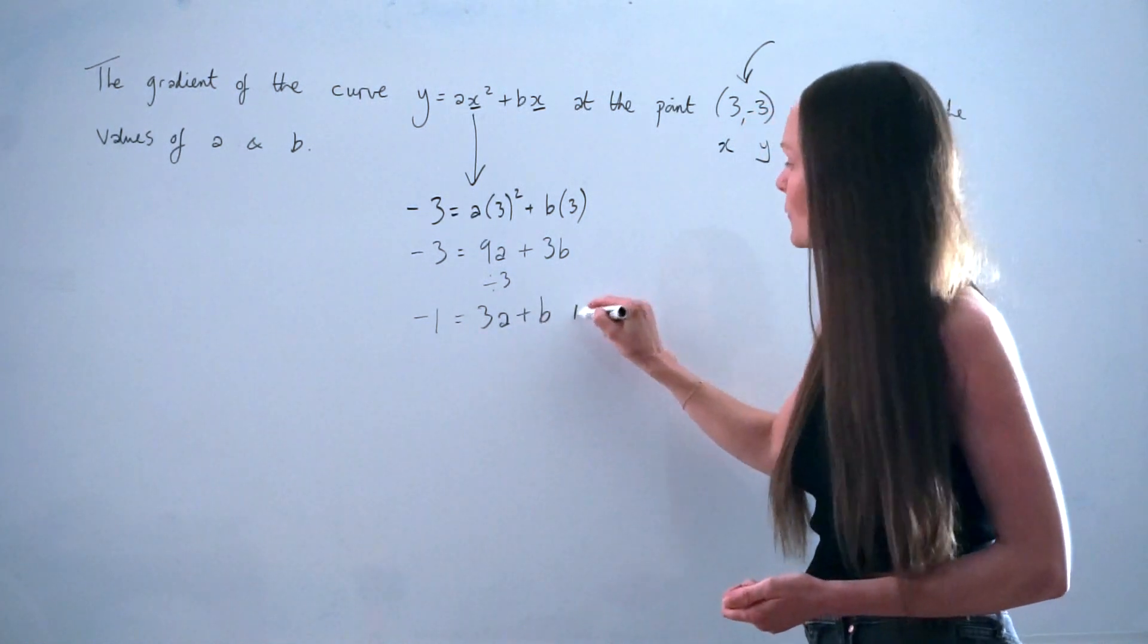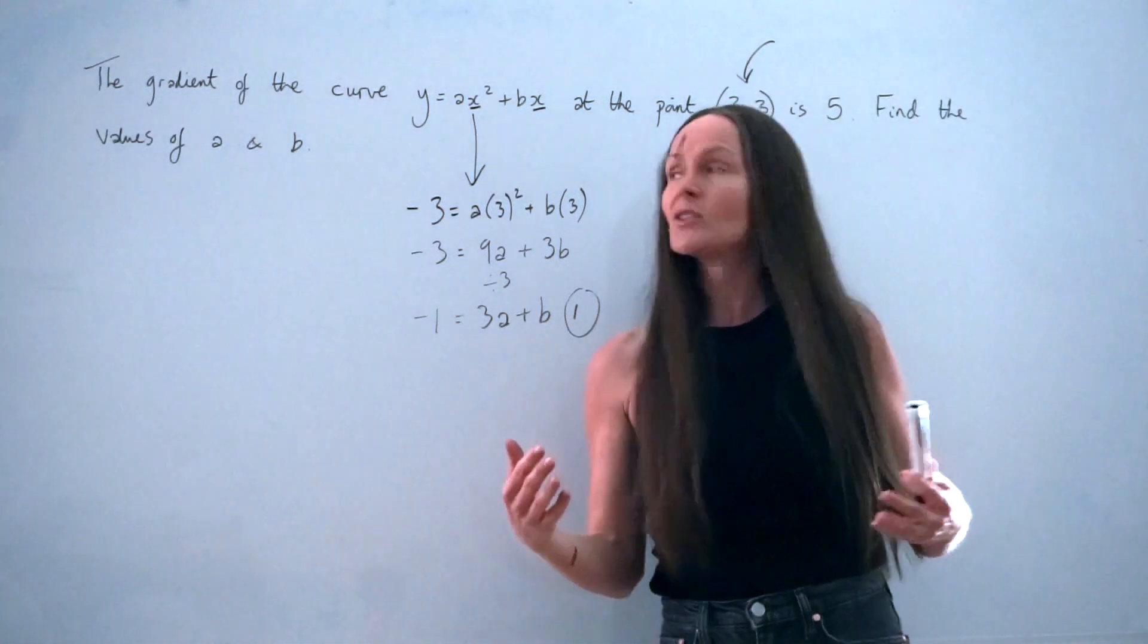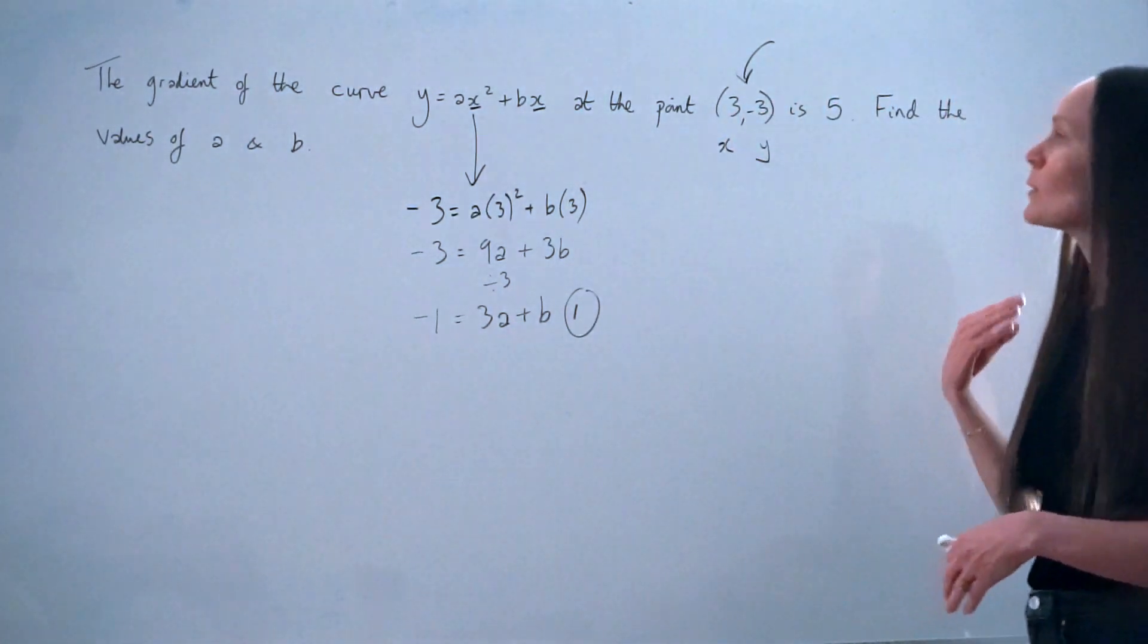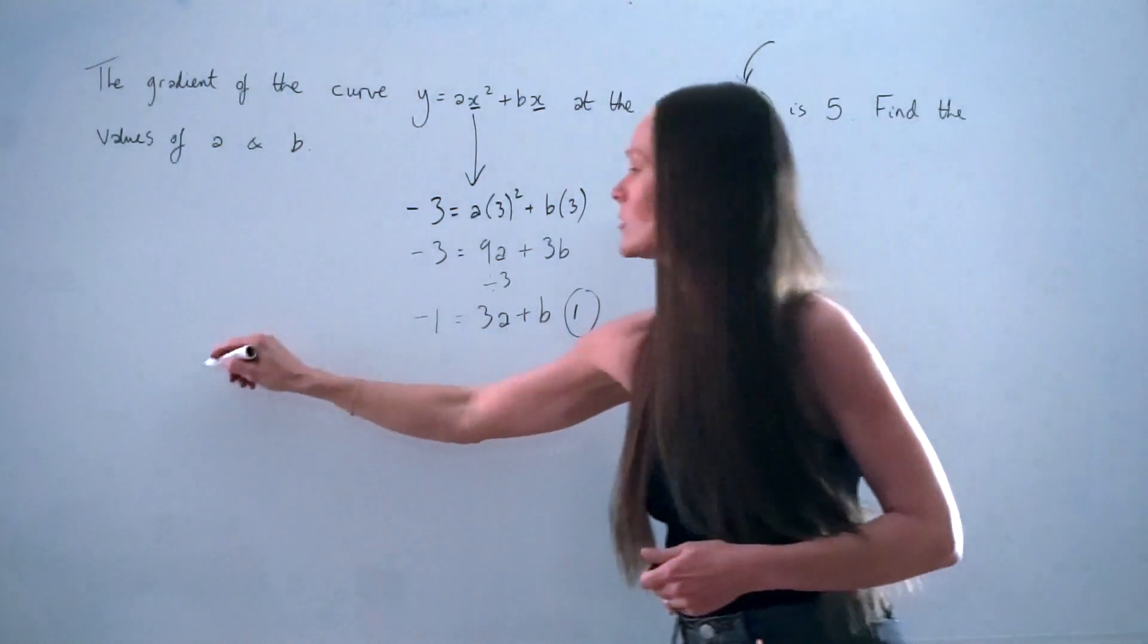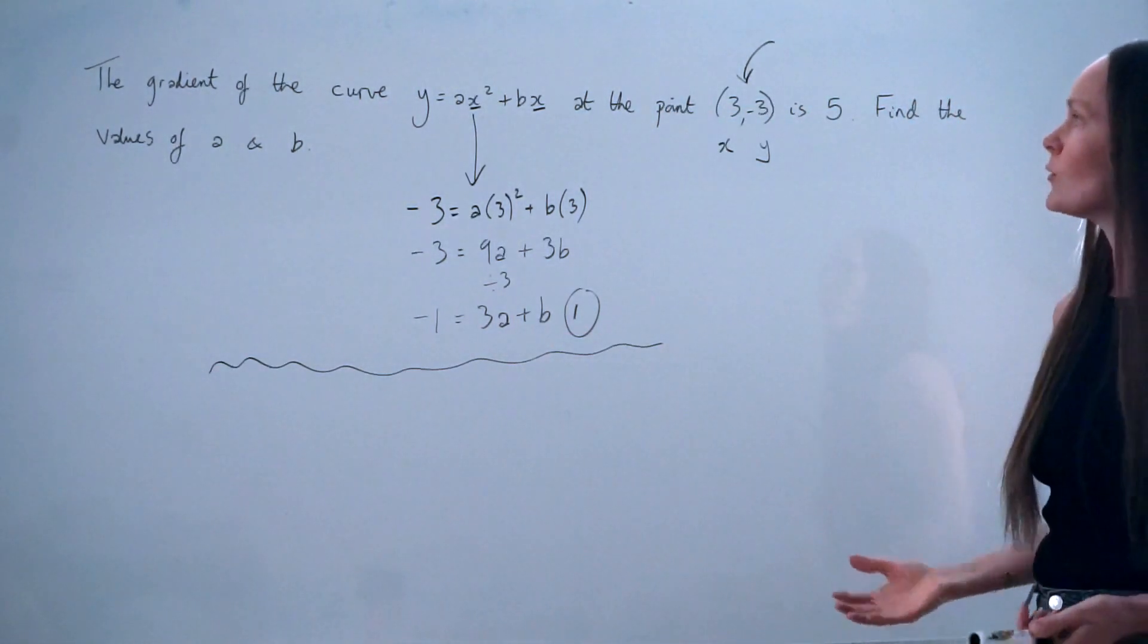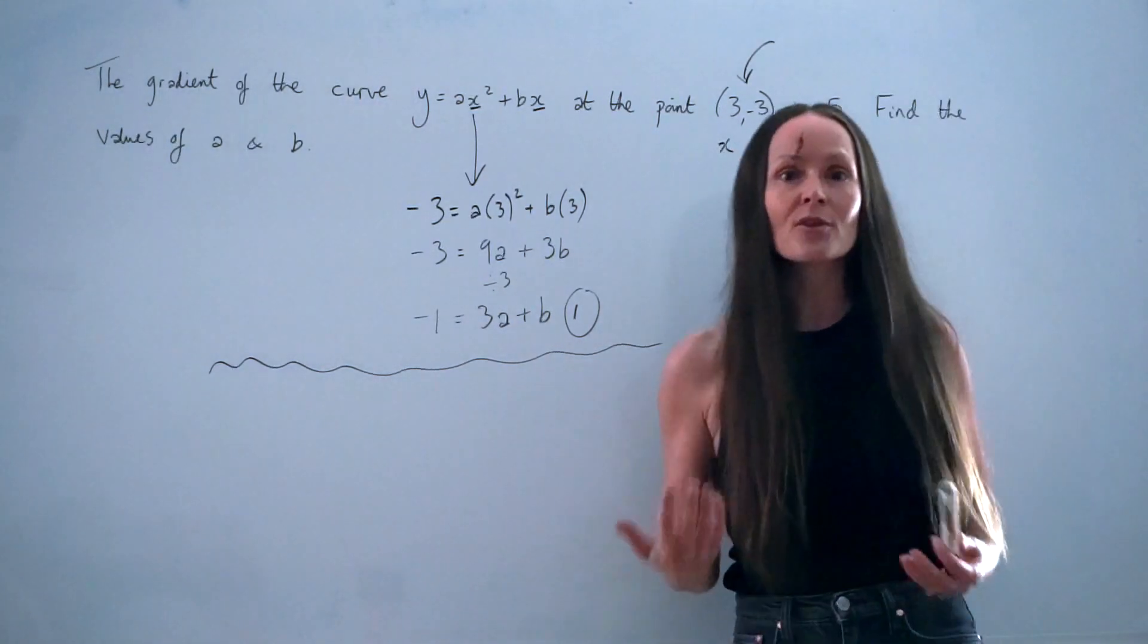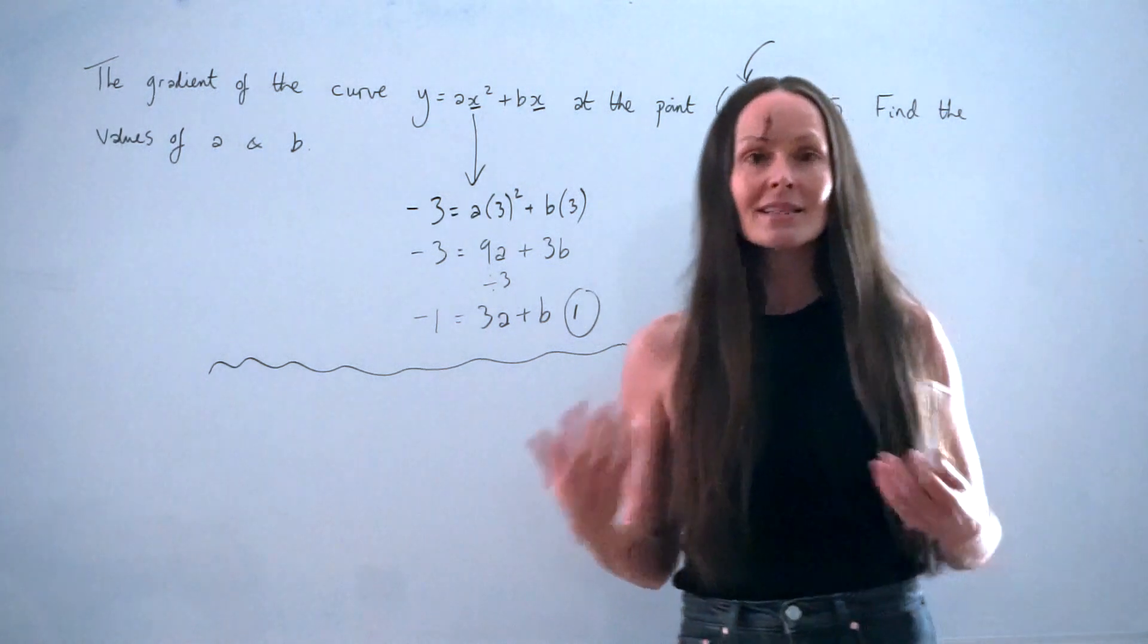So this is our first equation with a and b. Now we're going to go back to the question again and look to see how we might be able to form a second equation. We're told that the gradient of the curve at this point is 5. Now, if you have to work out the gradient of a curve, you need to differentiate.